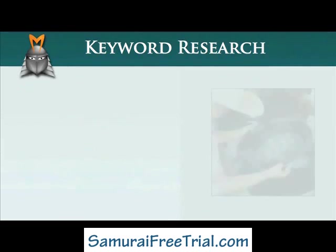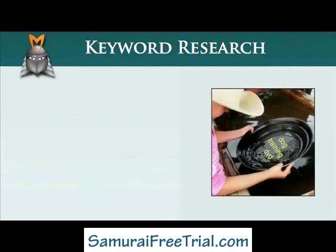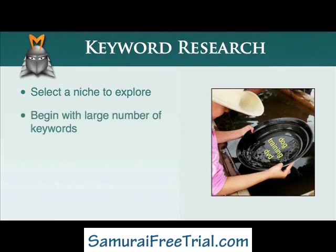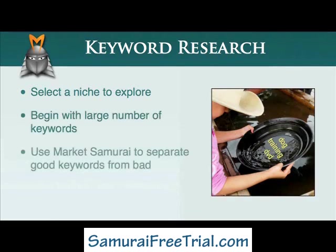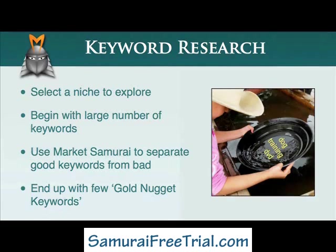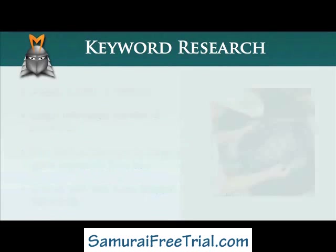The process of keyword research is very similar. You begin by selecting a niche to explore, which is the equivalent of choosing a river to prospect. You then generate a large number of keywords relating to your niche, which is like scooping up a collection of rocks, dirt and sand. Then you can use a tool such as Market Samurai to filter out the good keywords from the bad. At the end of this process, you'll hopefully be left with a few gold nugget keywords.